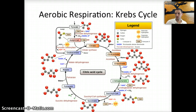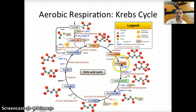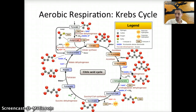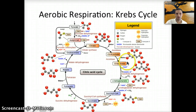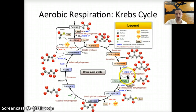The citrate is produced and then converted into an isomer called isocitrate. This isocitrate gets oxidized, reducing NAD+ to form NADH. At this point it also loses a carbon dioxide, so our molecule goes from having six carbons — the isocitrate — to having five carbons. We've released a single CO2 molecule and produced one NADH.